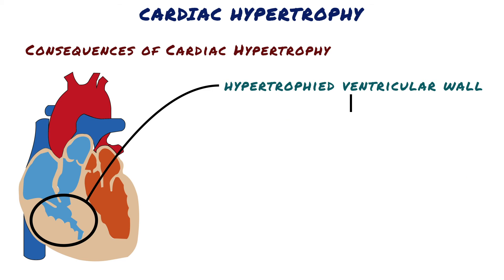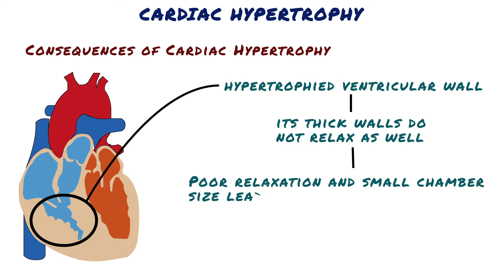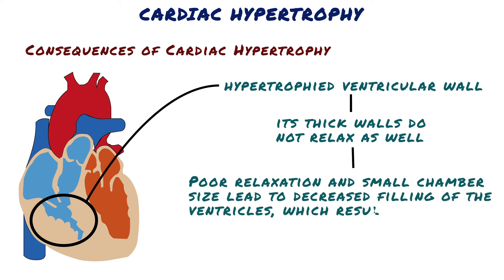Second, while hypertrophy allows the heart to squeeze better, its thick walls do not relax as well. In addition, the muscle can get so thick that the chamber becomes quite small. Poor relaxation and small chamber size lead to decreased filling of the ventricles, which results in decreased cardiac output.